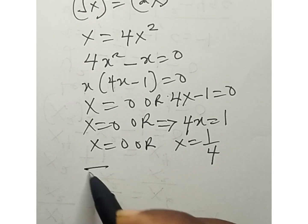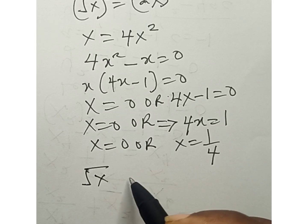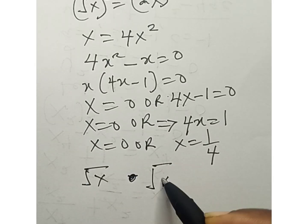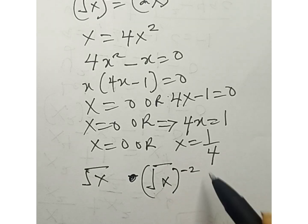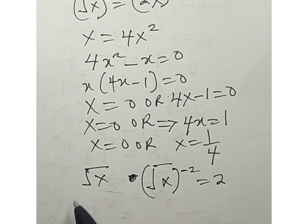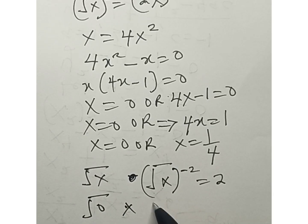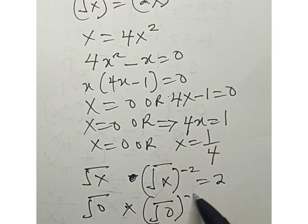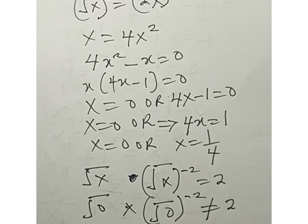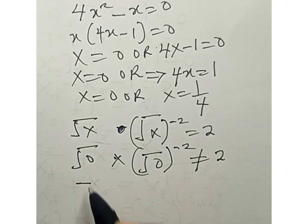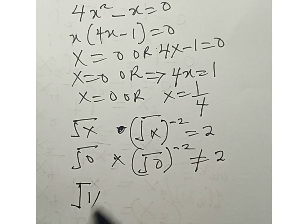rewrite the original equation: √x · (√x)^(-2) will give us 2. So we'll put 0 times (√0)^(-2) is not equal to 2. That will not work, so we won't take that solution, but we can put 1 over